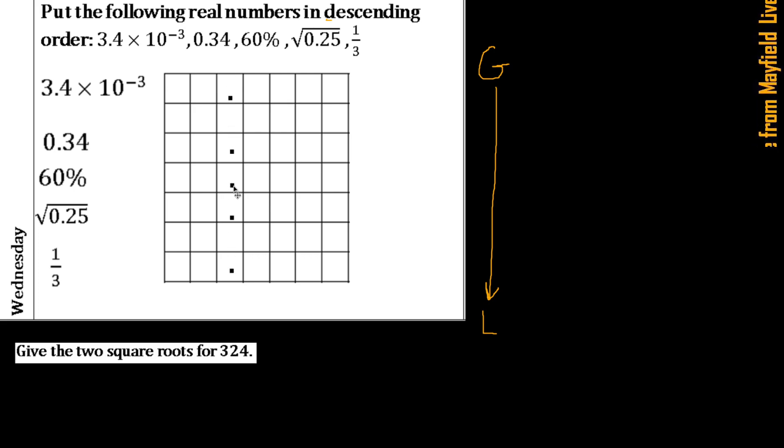Make sure those decimal points are all in a vertical line, all in the same column, because that's what we're trying to do with those grids there. You want to make sure you can say okay, I had 3.4 × 10^-3. Well, how do I change that?